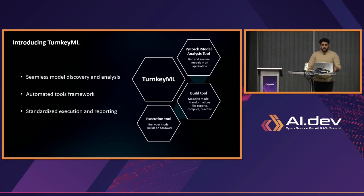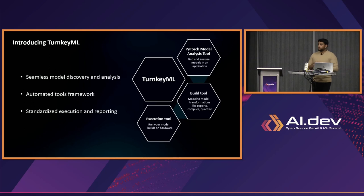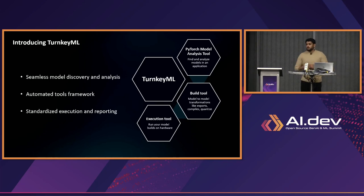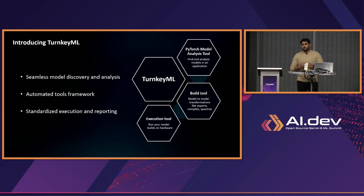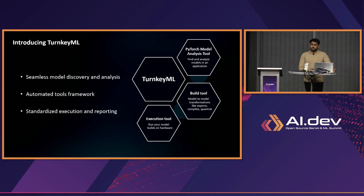TurnkeyML is a suite of tools that seamlessly connect with each other. There is a PyTorch model analysis tool that recognizes models just from an example Python file — you don't have to extract the model manually; the tool automatically recognizes where the model is, what the inputs are, and what it looks like. There is a build tool for transforming models — quantizing, distilling, or compiling. And finally, there is an execution tool for running the built model on specific hardware. These tools work together and provide a standardized execution and reporting framework.